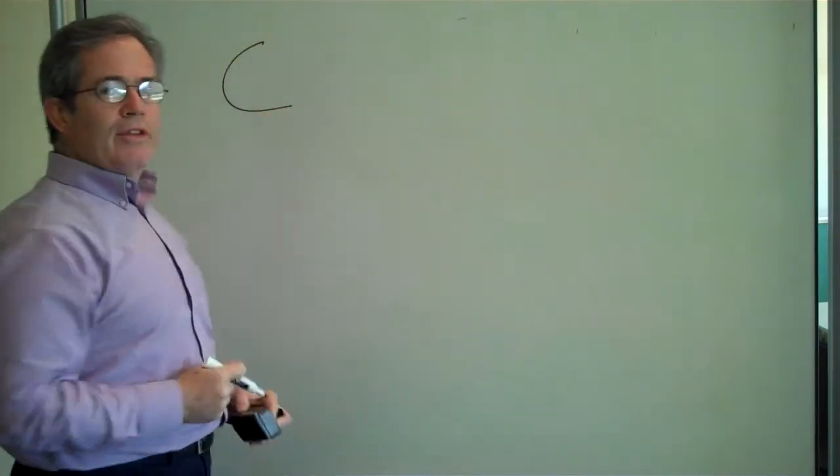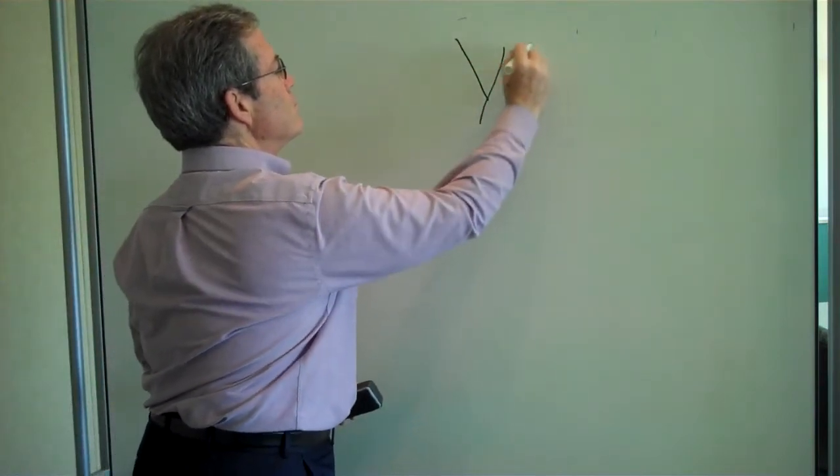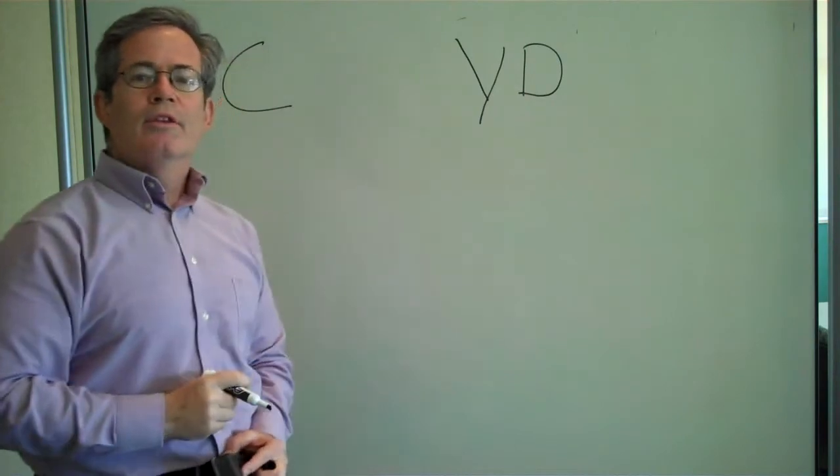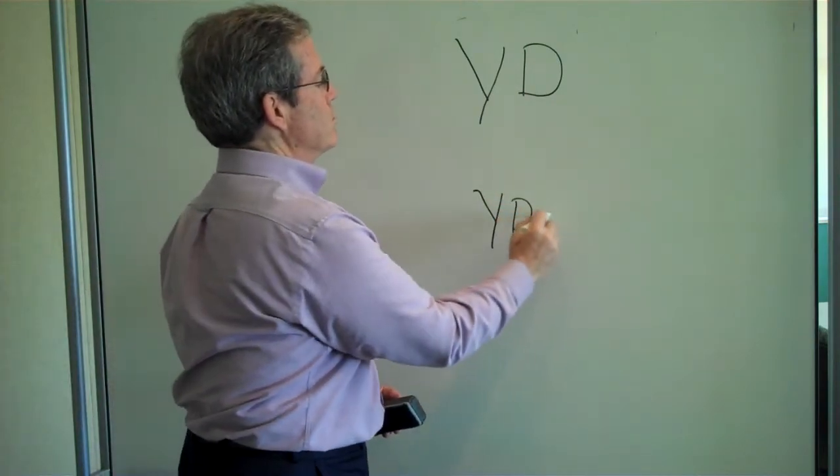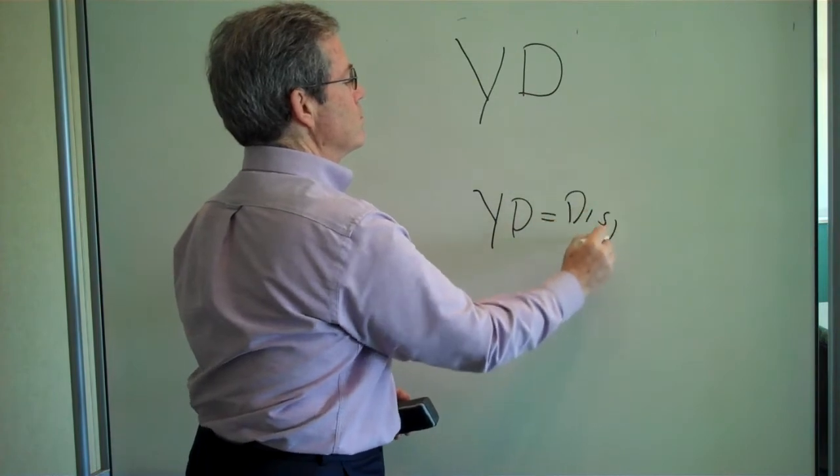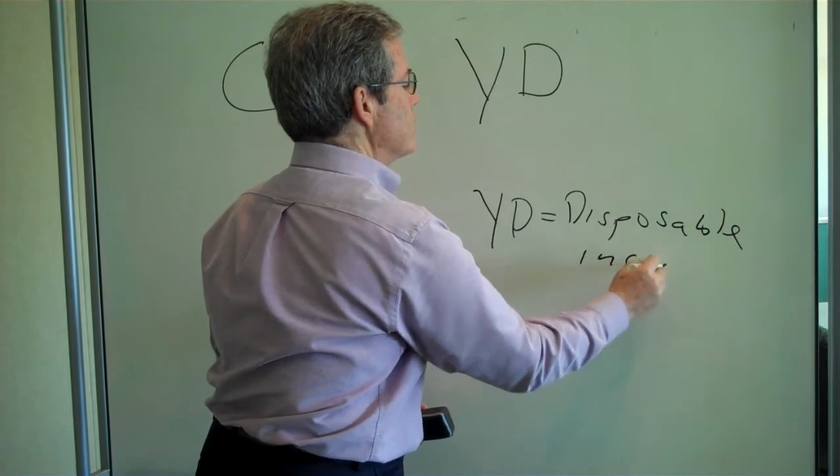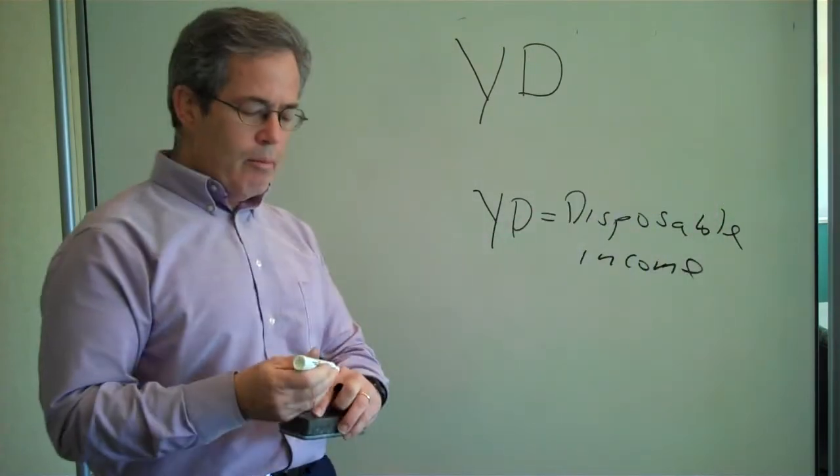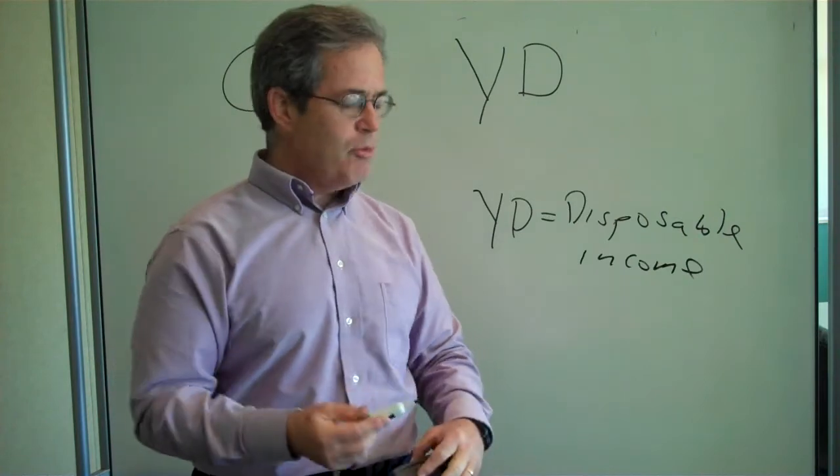So we're going to say that consumption depends on disposable income. That's the amount of income that you have after you've paid your taxes.